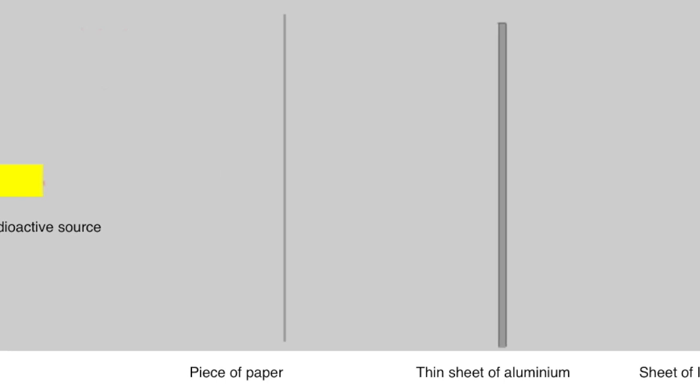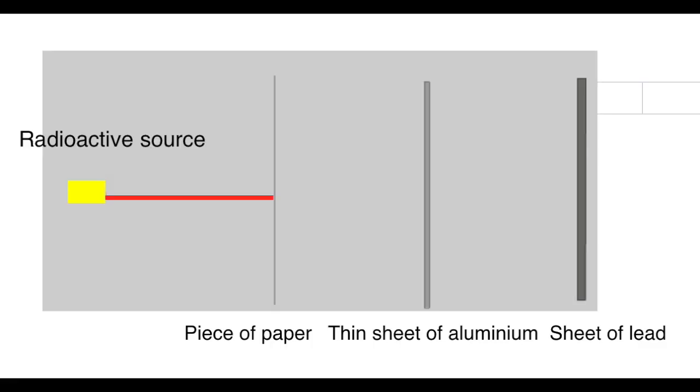First of all, alpha radiation. Alpha radiation doesn't get very far even in a vacuum. It is stopped by a thin sheet of paper, and if there were air in here, then its range would only be two, three, four, five centimeters at the most.